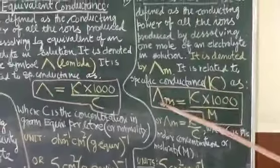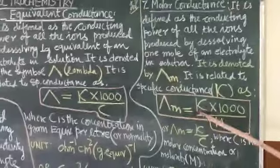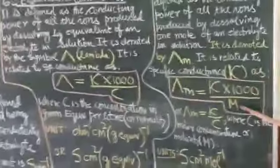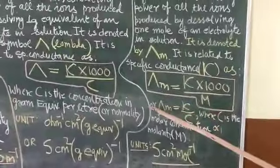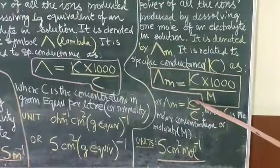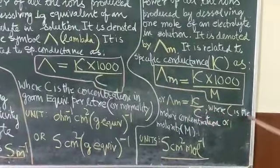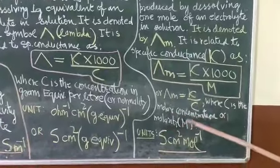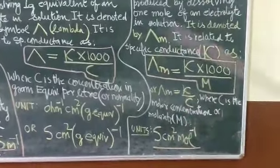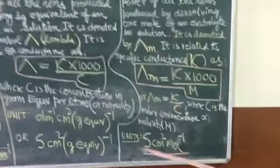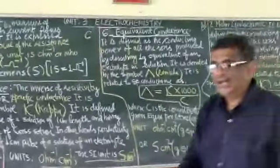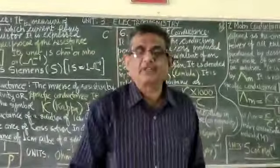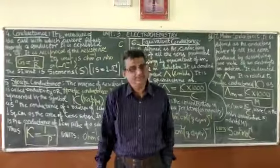As lambda m equals kappa into 1000 upon M, or we can write M equals kappa upon C, where C is the molar concentration or molarity, that is capital M. The units of molar conductance are siemens centimeter square mole inverse. Thank you very much. I will continue with some more terms in the next video. Thank you.